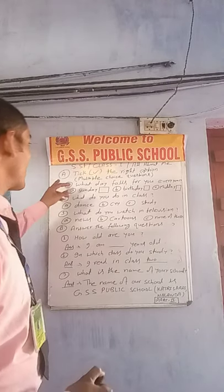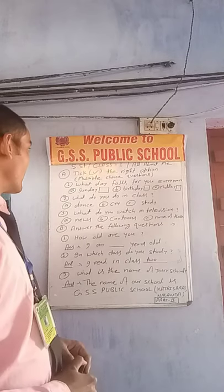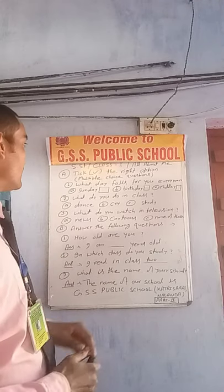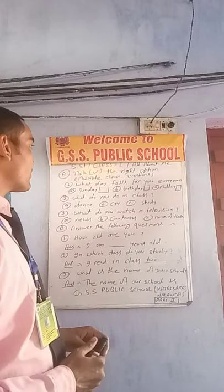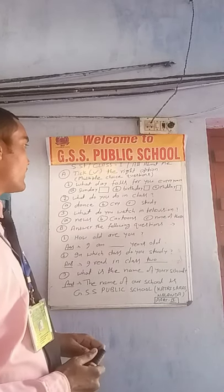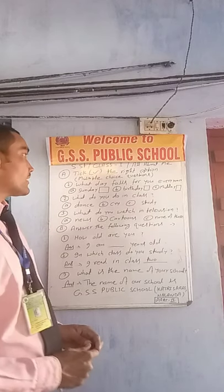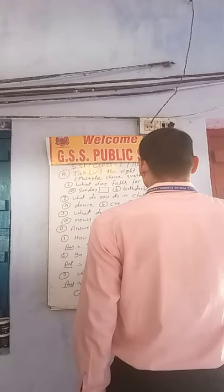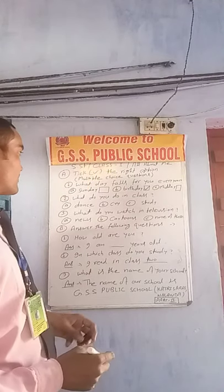The first question is: seek the right option. This question is, what is false for you every day? The answer will be the third option. The first question answer is option B.